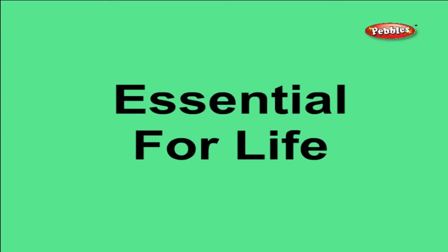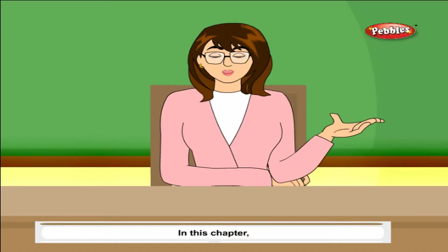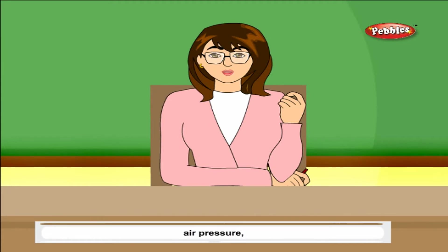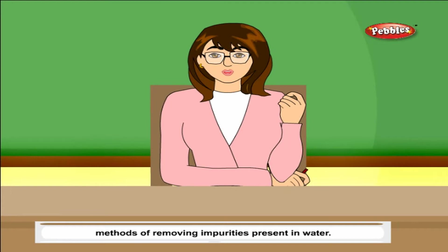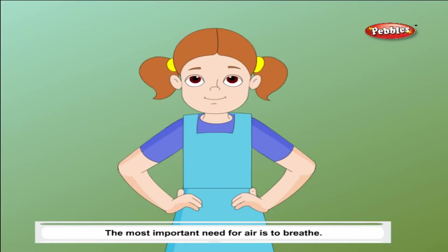Essential for life: air and water. In this chapter you will learn about the importance of air, what air is made up of, properties of air, air pressure, water, methods of removing impurities present in water.